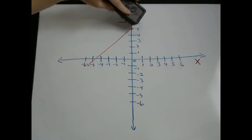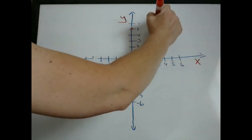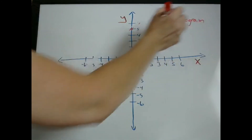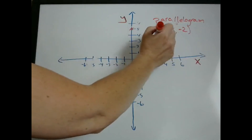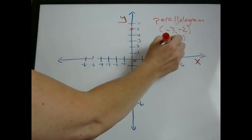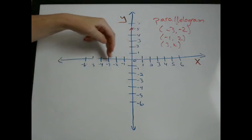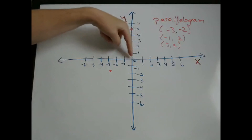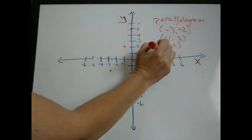One other way they might test you on graphing and plotting is they may give you some points for a shape, for example a parallelogram, and ask you to find the last point. So let's say they give you three points: (-3, -2), (-1, 2), and (3, 2). The first thing you need to do is plot these points. Negative 3, negative 2 — start at origin, go left 3, down 2. Negative 1, positive 2 — go left 1, up 2. And (3, 2) — go right 3, up 2.